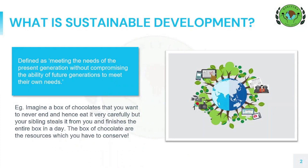Let's understand what exactly sustainable development means. Sustainable development means making the world a better place without destroying the possibilities for the next generation. It is thus defined as meeting the needs of the present generation without compromising the ability of the future generations to meet their own needs. In simpler words, we are to use our resources judiciously so that our successors are not ripped off from their own needs.